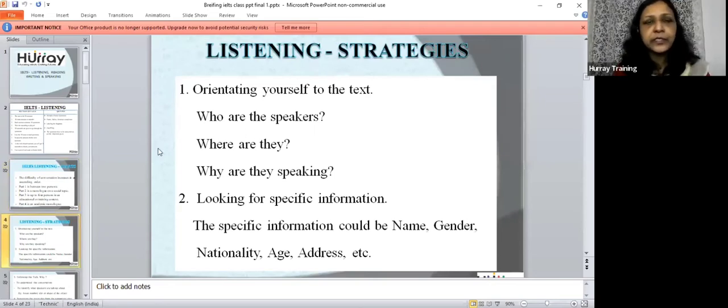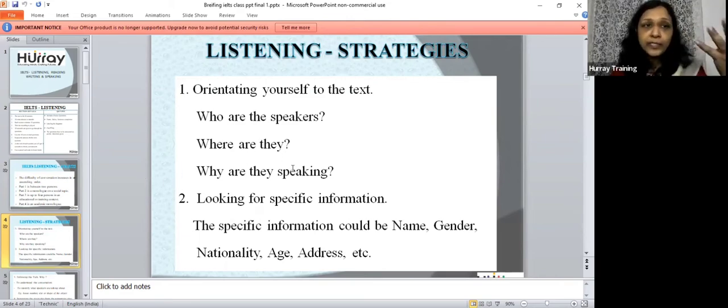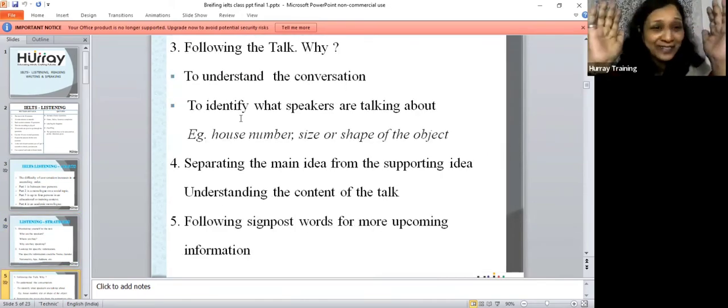Now let's look at the strategies for listening. Orient yourself on the text. So understand who the speakers are, where they are located. Why are they speaking? What is the purpose? Look for specific information. For example, details like the name of a person, the gender, the nationality, the age, the address, phone number, or it could be building number. It could be the road's name, or such a word.